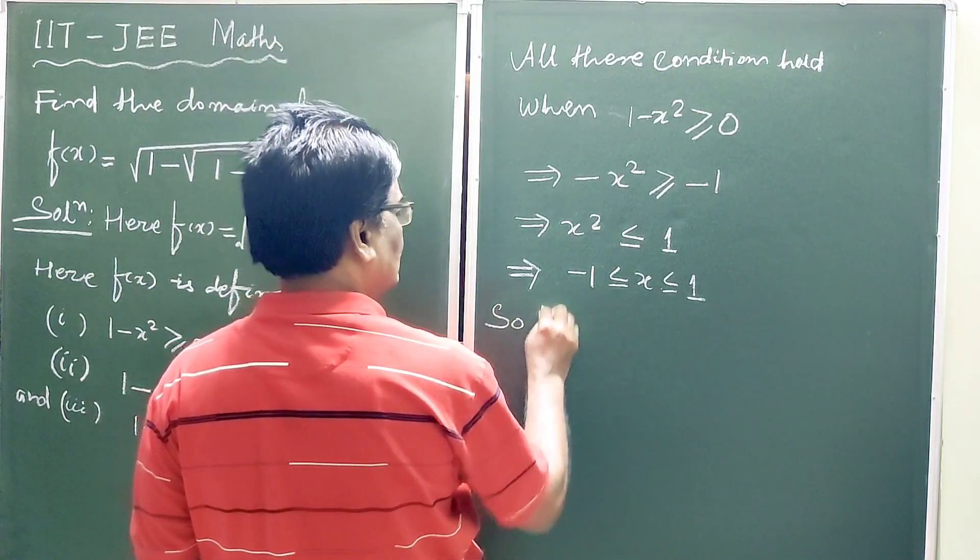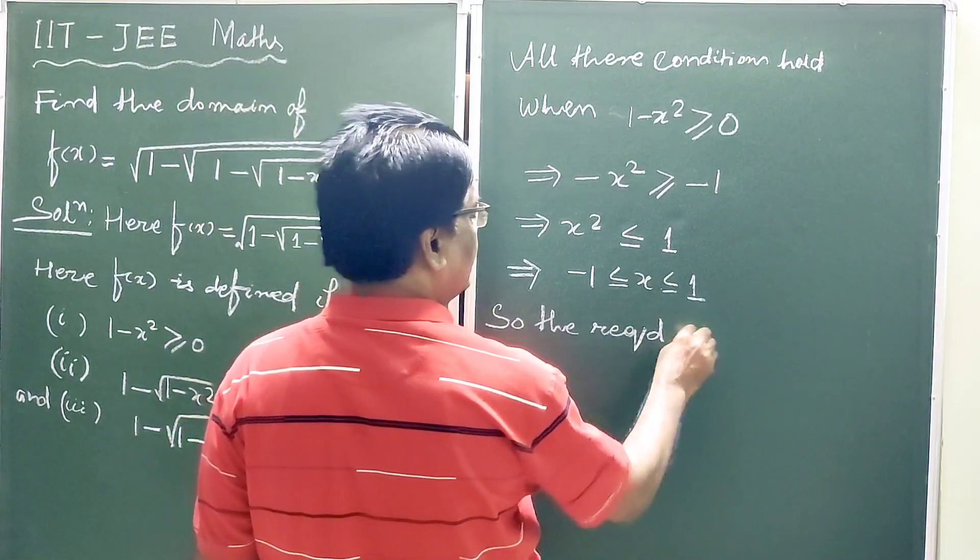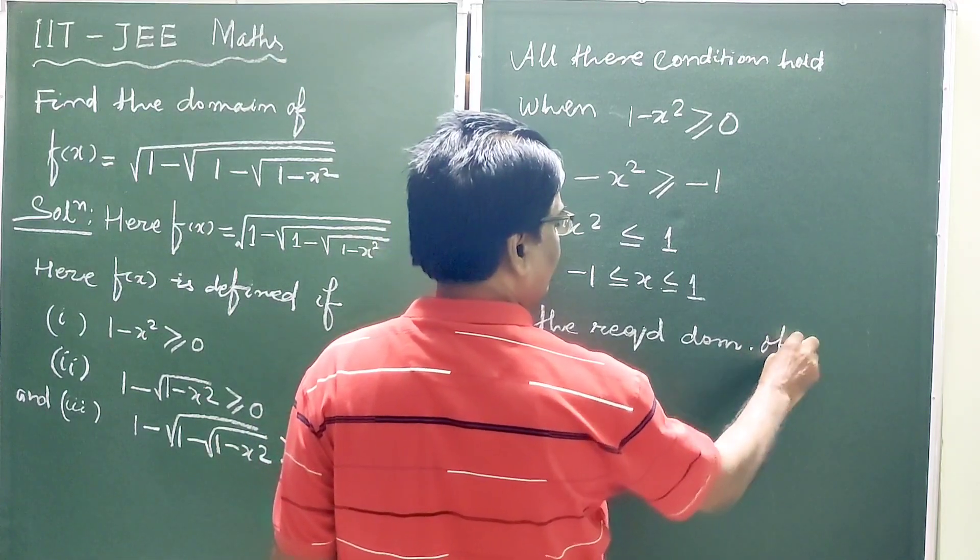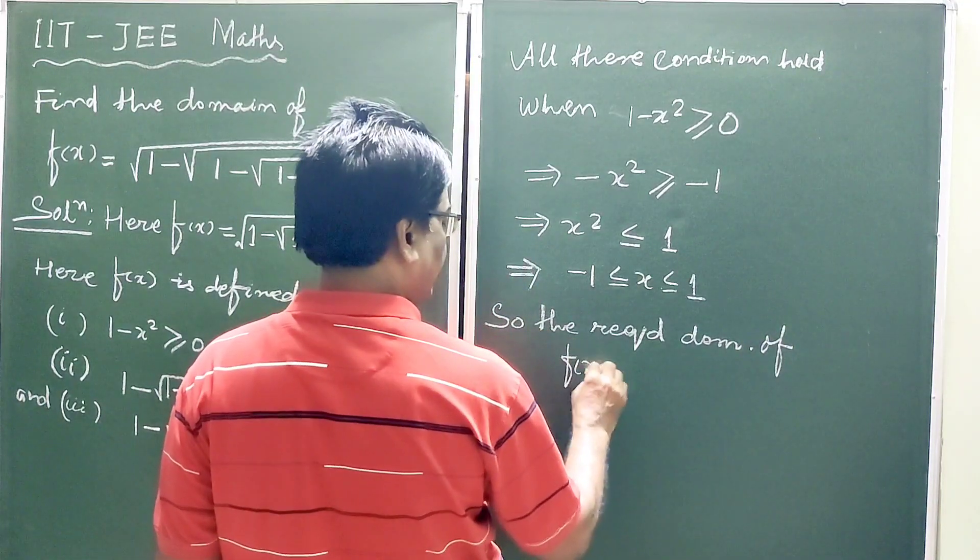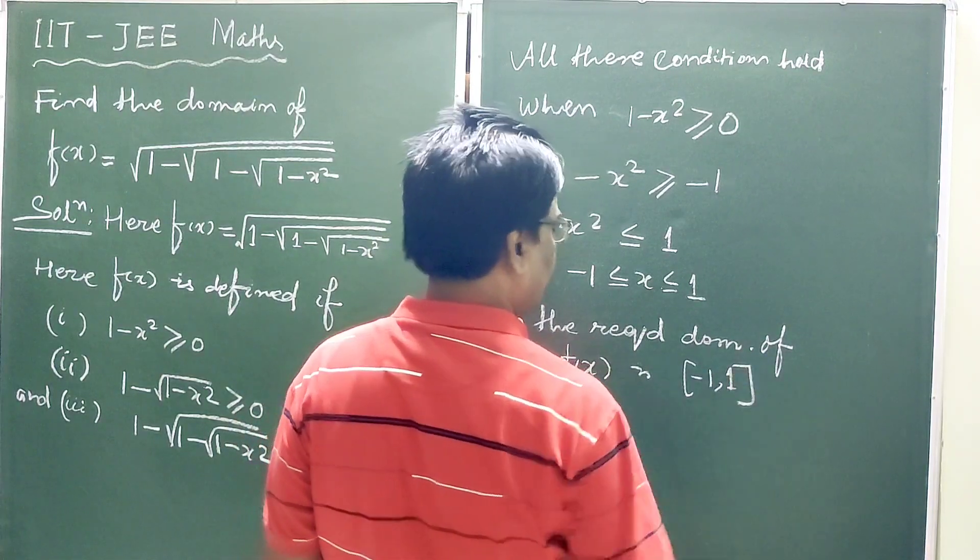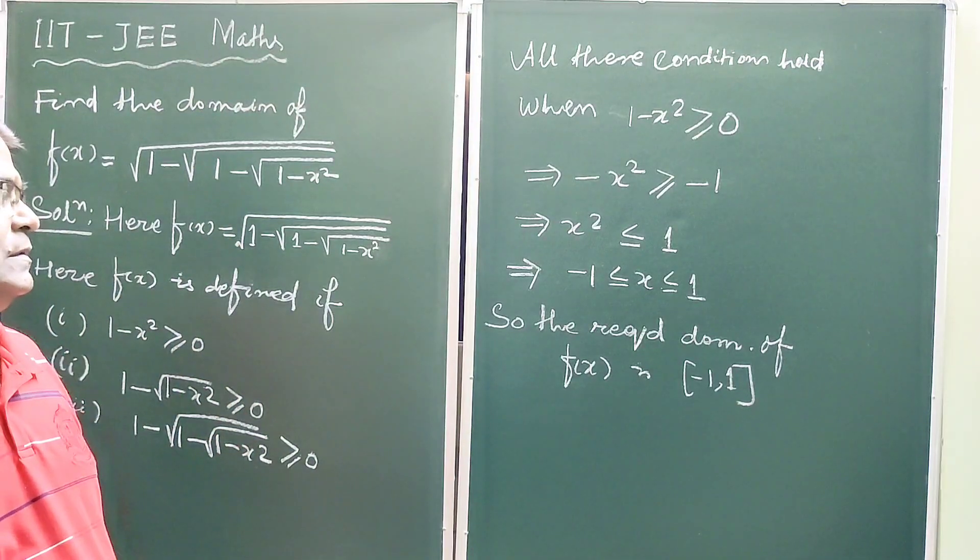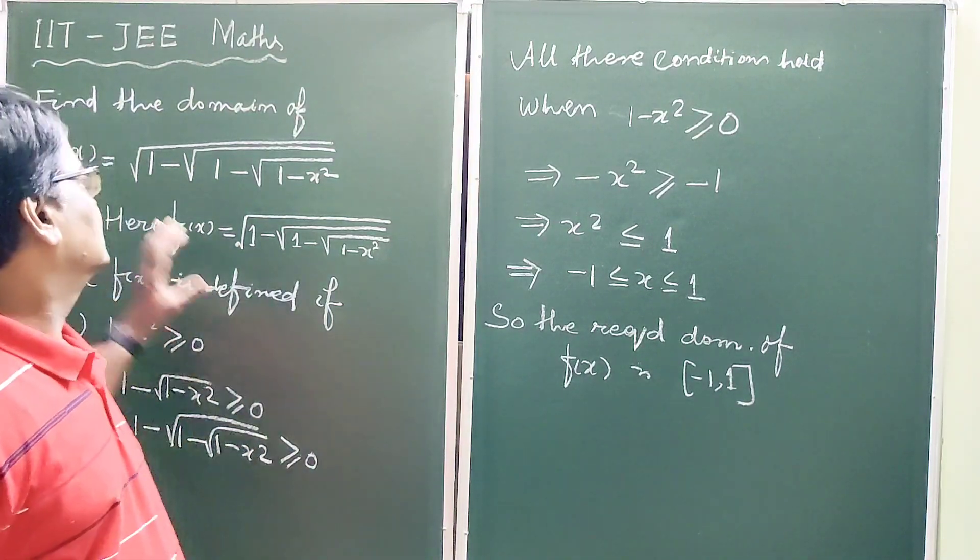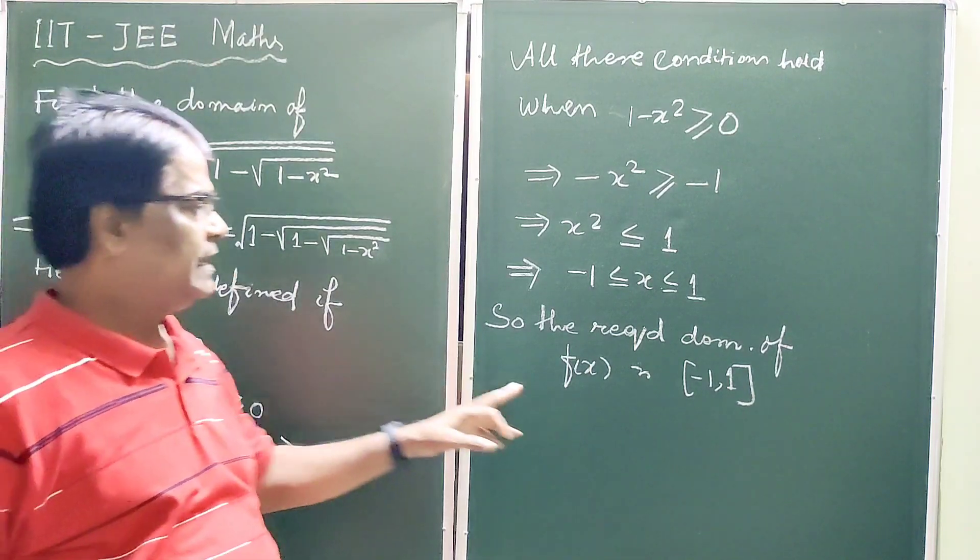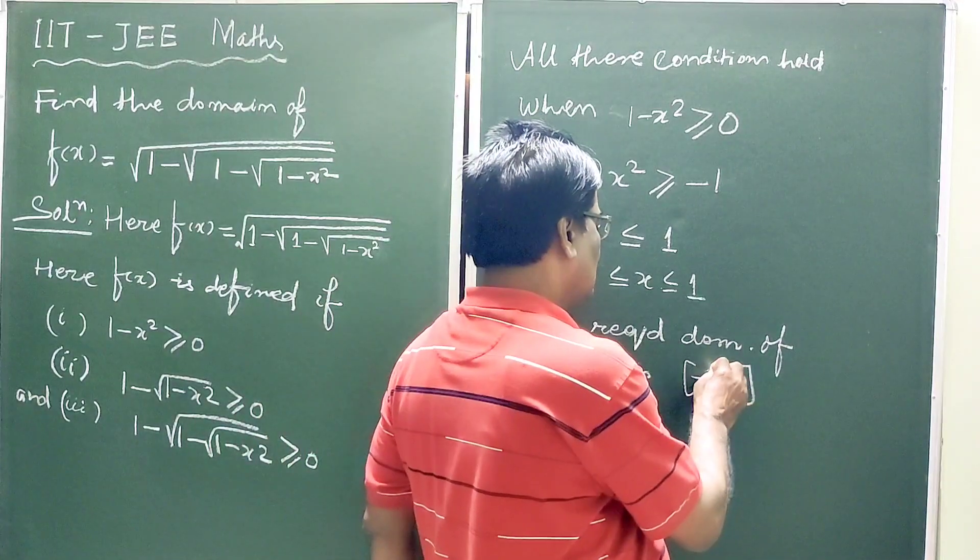So the required domain of f(x) is -1 to 1, closed interval. So after simplification we get the domain of the given function is the closed interval -1 to 1.